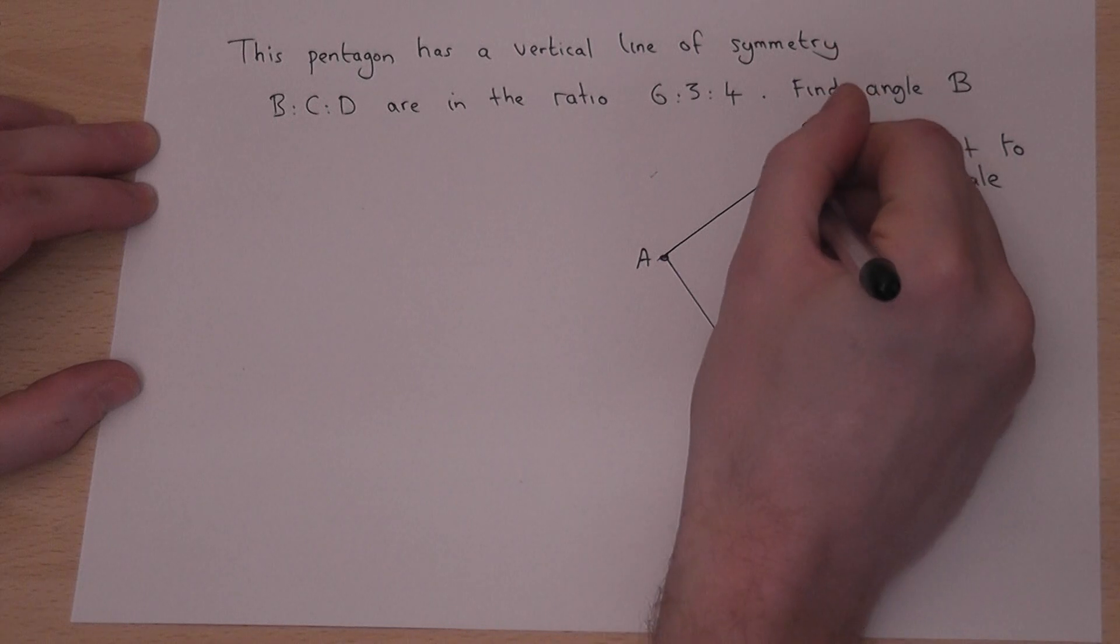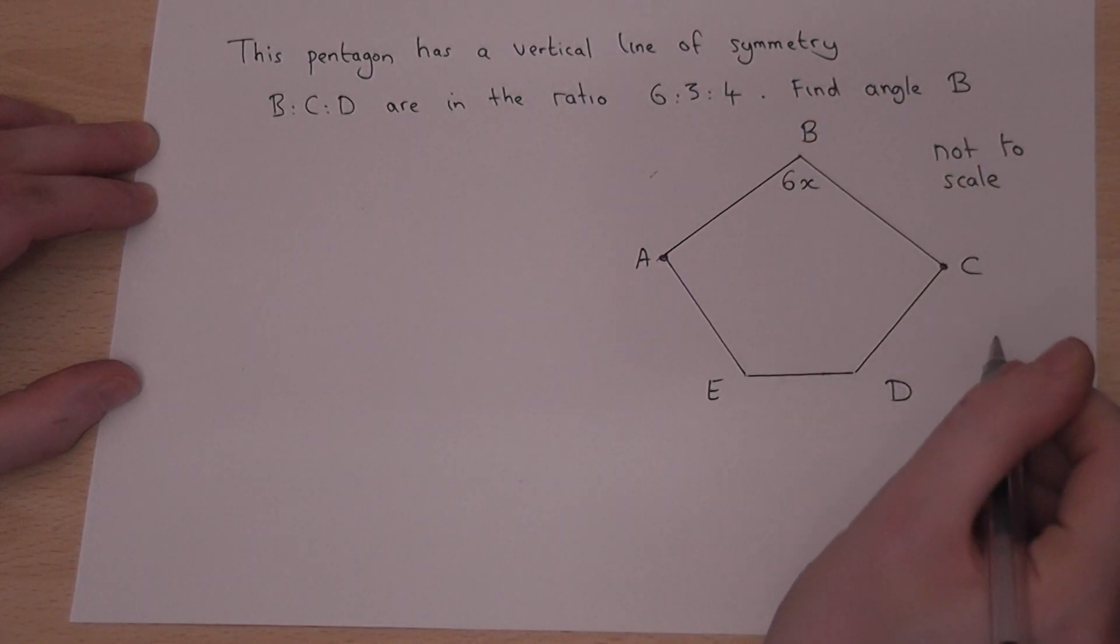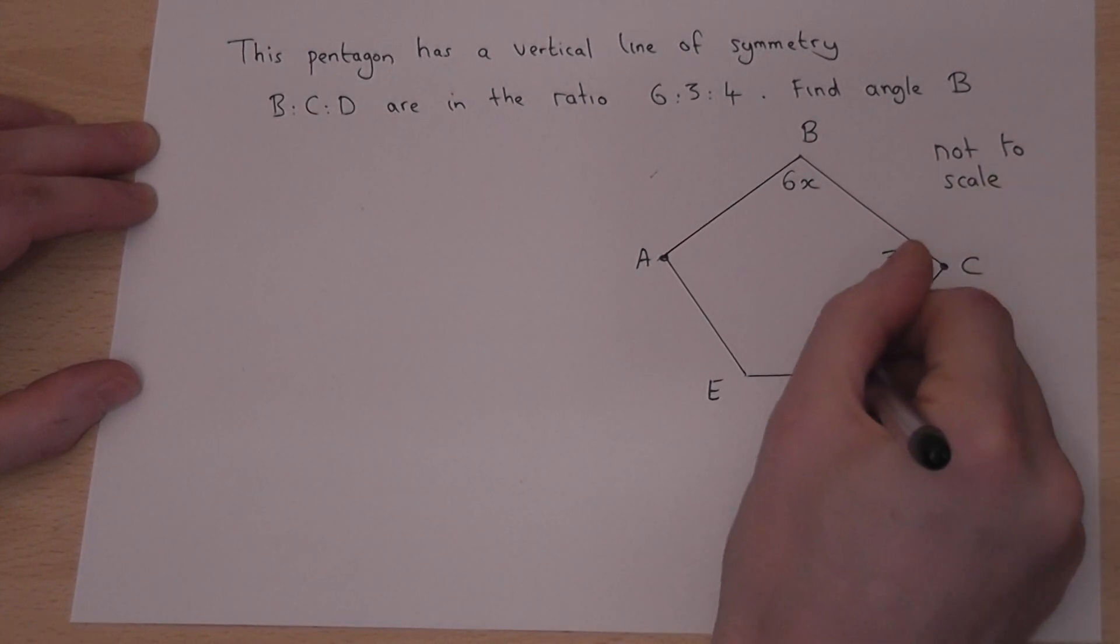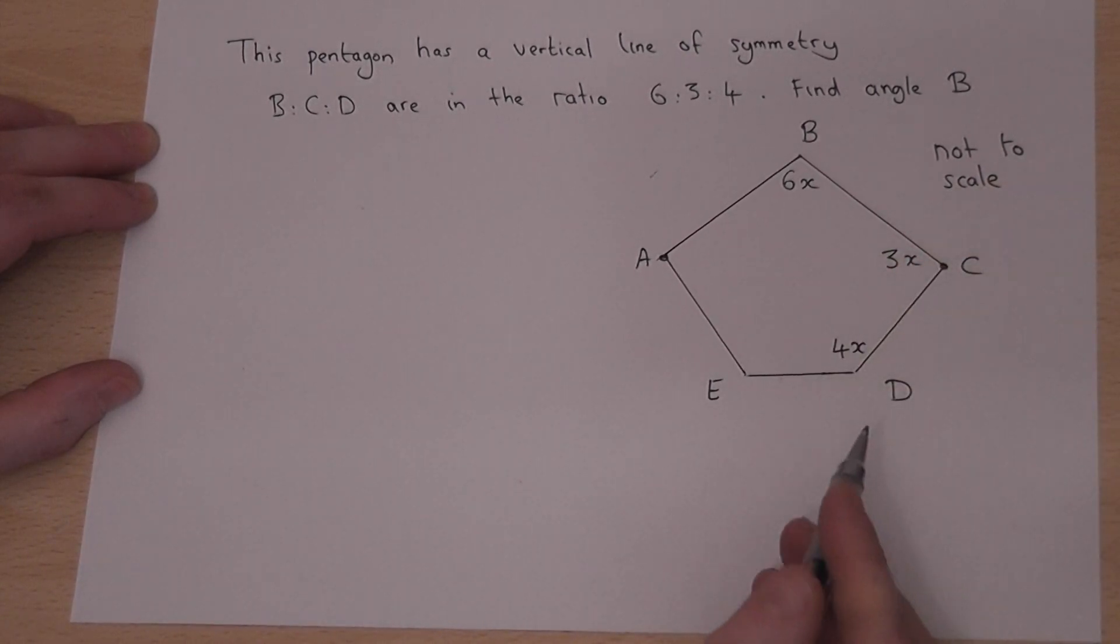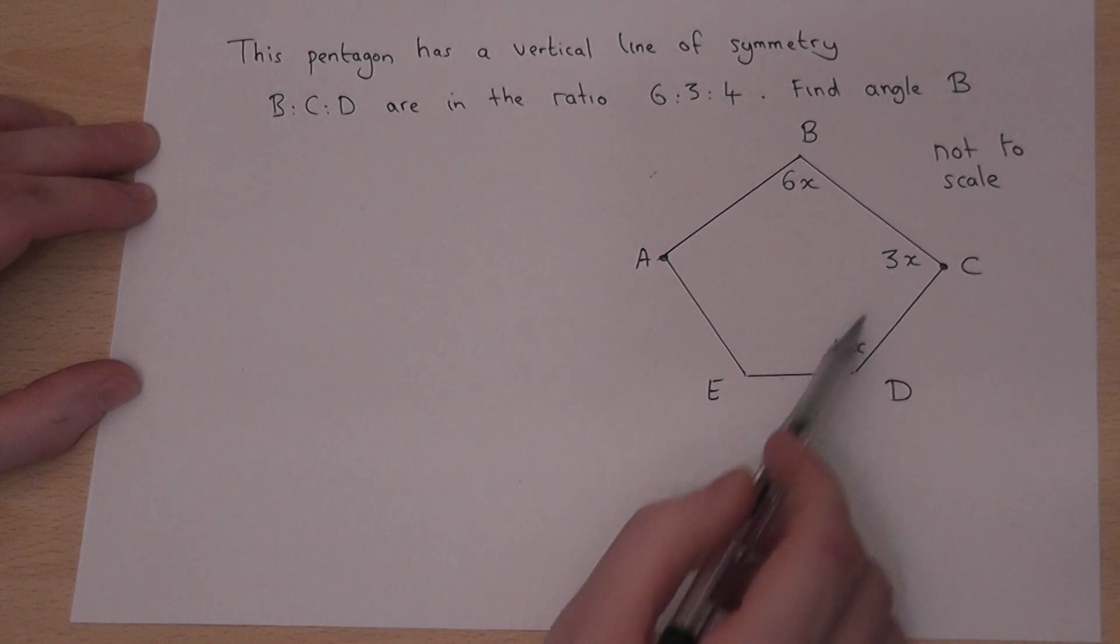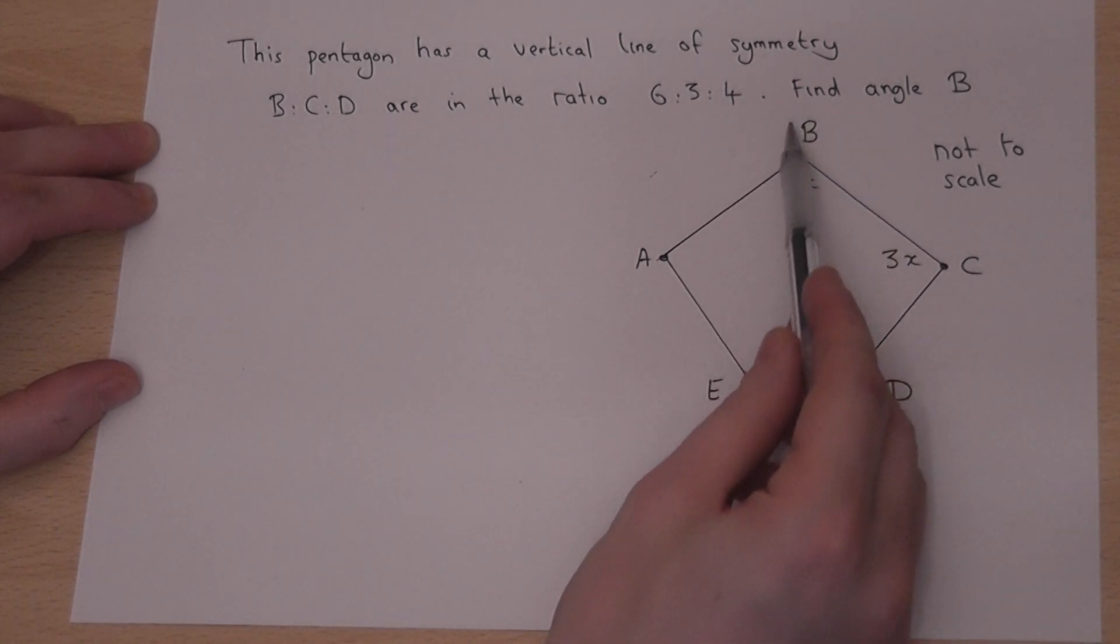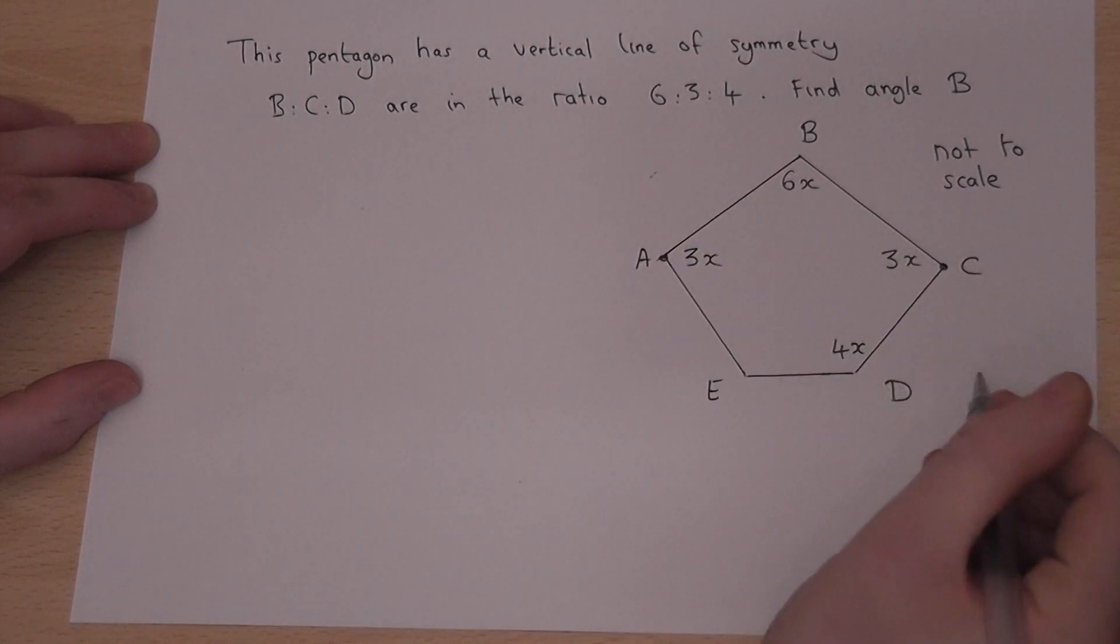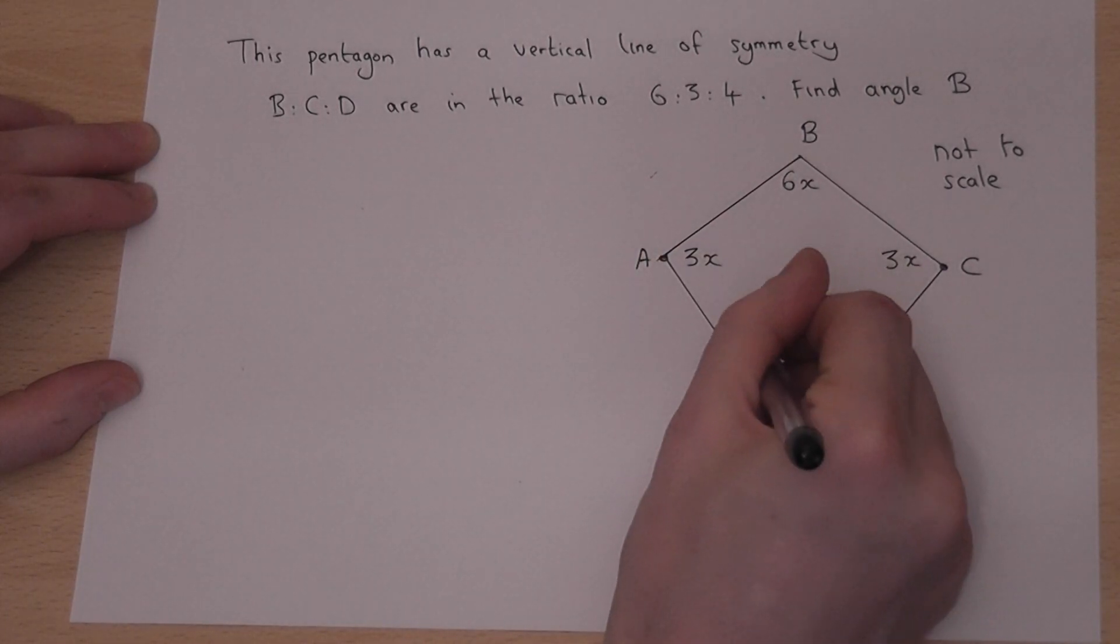If I call angle B 6x, then angle C must be 3x and angle D must be 4x - in other words, the ratio 6 to 3 to 4. But due to the line of symmetry, angle A must also be 3x and angle E must be 4x.